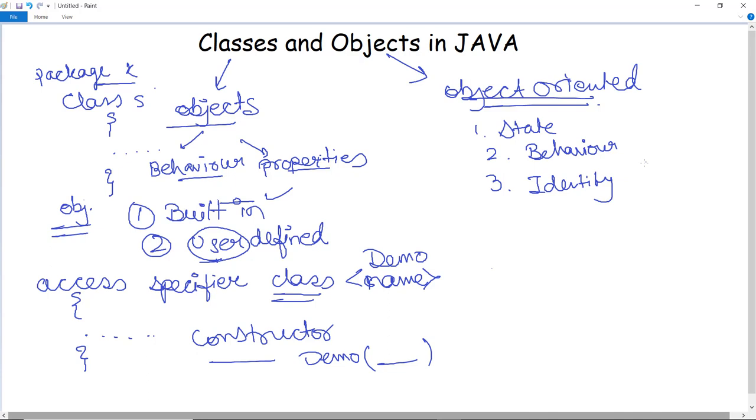So the state represents the attributes and the properties. Behavior defines the methods and identity provides a unique name to an object so that it can be used to enable communication between two or more objects in Java.